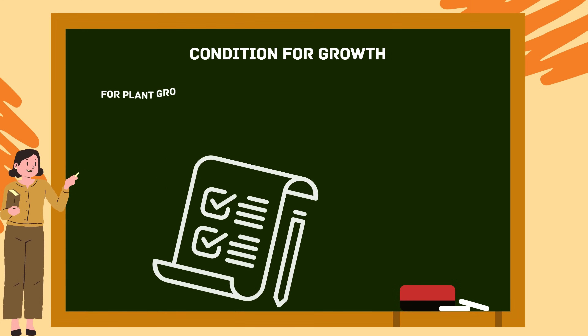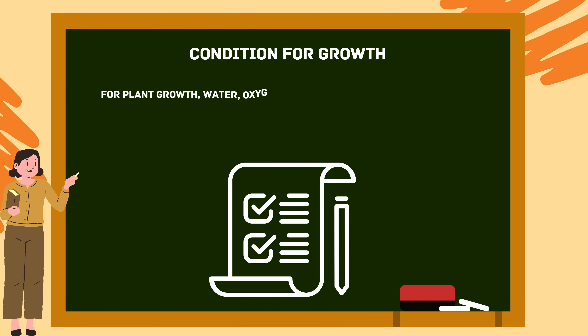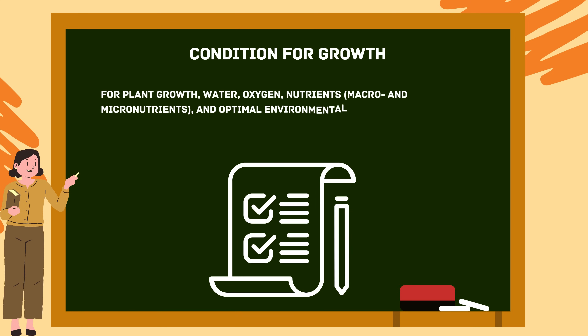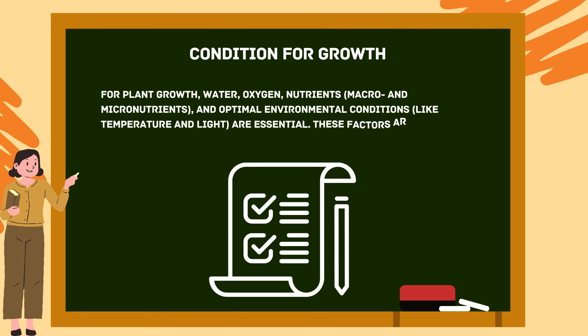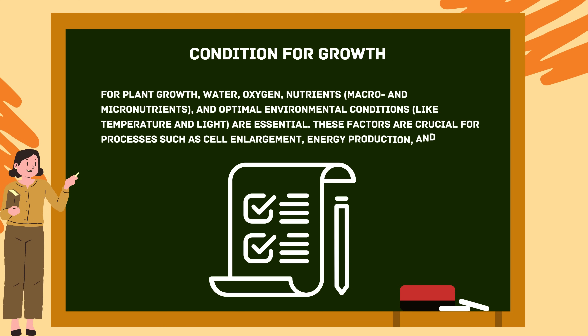Conditions for growth: For plant growth, water, oxygen, nutrients — both macro and micronutrients — and optimal environmental conditions like temperature and light are essential. These factors are crucial for processes such as cell enlargement, energy production, and maintaining turgidity.